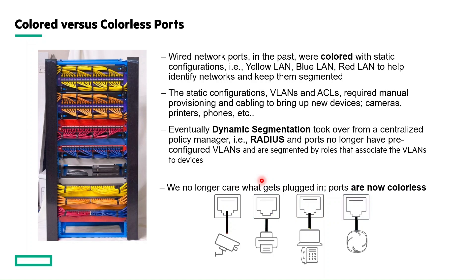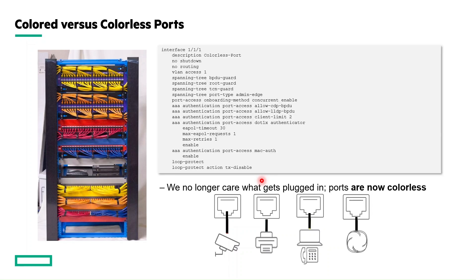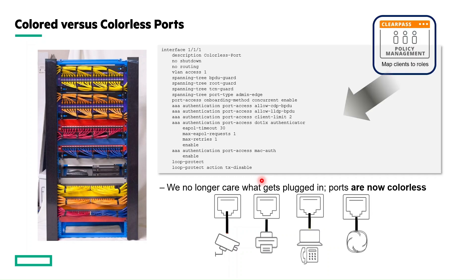Eventually, dynamic segmentation took over from a centralized policy manager — for instance RADIUS — so that we no longer needed static configuration. The end result is no more colored ports. With colorless port configuration, we onboard ports through 802.1x or MAC authentication concurrently, forwarding authentication requests to a RADIUS server like ClearPass Policy Manager. ClearPass profiles the device and automatically returns a rule to the switch to map the device to a specific VLAN and apply access restrictions. This configuration only needs to be pushed once and is never touched again, making it a major advantage over colored ports.